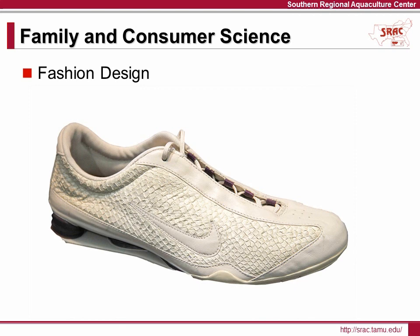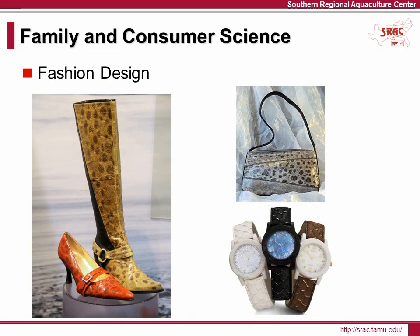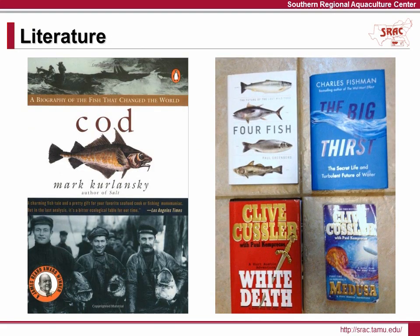Believe it or not, fish skins are being incorporated into fashion design. Leather made from the skins of tilapia, Nile perch, carp, salmon, and even sturgeon are making headlines in the fashion world. Designers are creating handbags, wallets, watch bands, and many more items. Fish and aquaculture also provide a subject for ample reading in numerous books by well-known authors. Here are but a few: Cod: A Biography of the Fish That Changed the World; Four Fish: The Future of the Last Wild Food; The Big Thirst: The Secret Life and Turbulent Future of Water; and two fiction adventure novels with aquaculture-related themes by best-selling author Clive Cussler. I strongly encourage you to check them out.